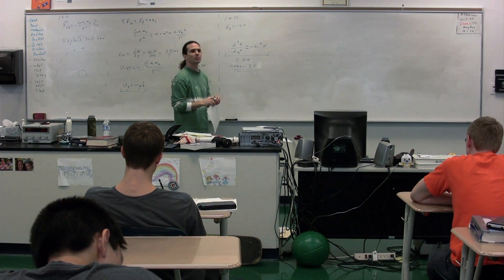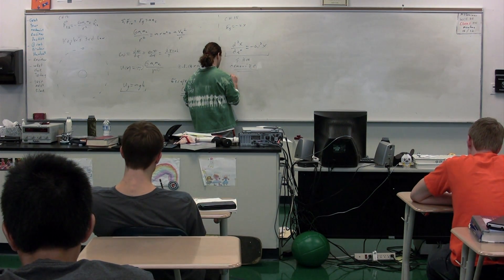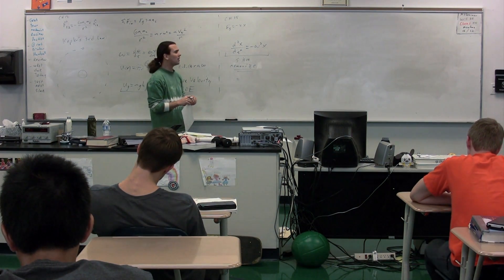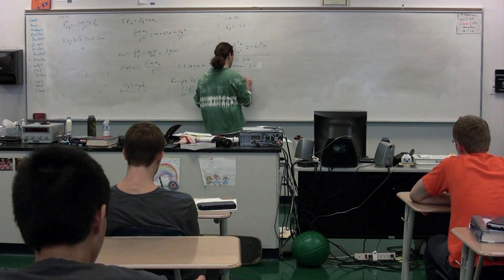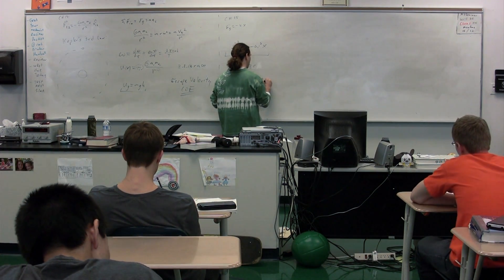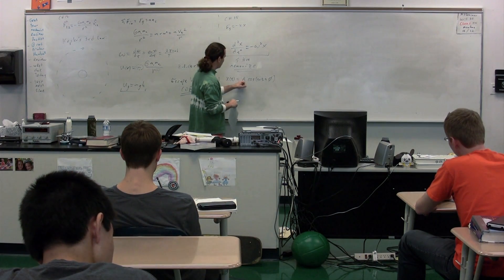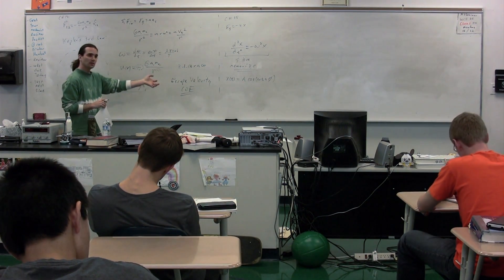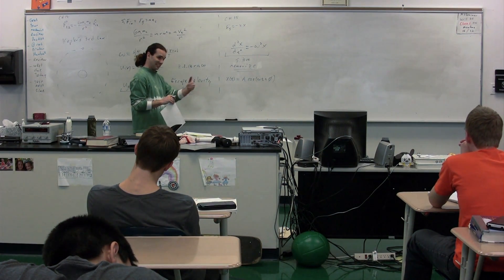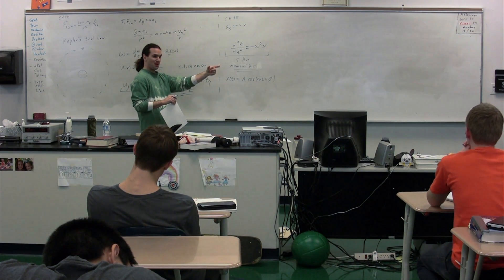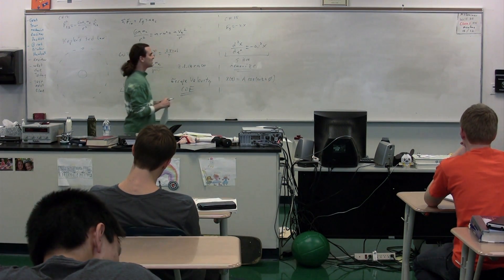What's an example of an equation for the position of an object that satisfies this simple harmonic motion definition? The position as a function of time is A cosine of omega t plus phi, where A is the maximum distance from the equilibrium position, omega is the angular frequency, and phi is the phase constant or phase shift.